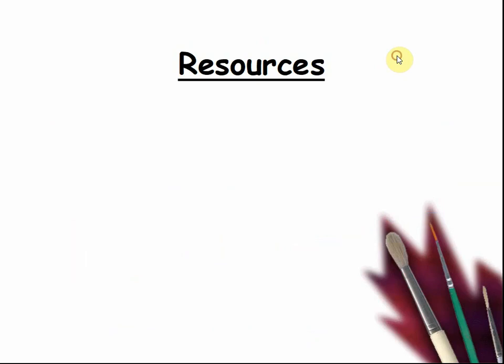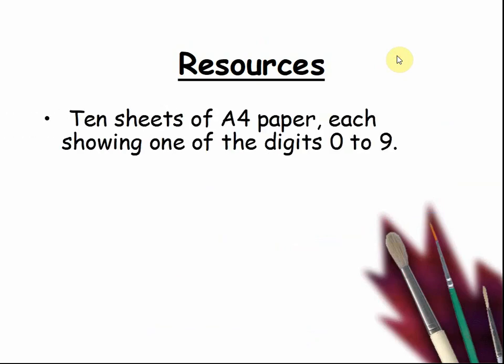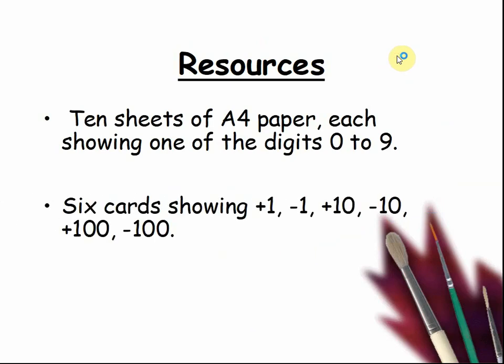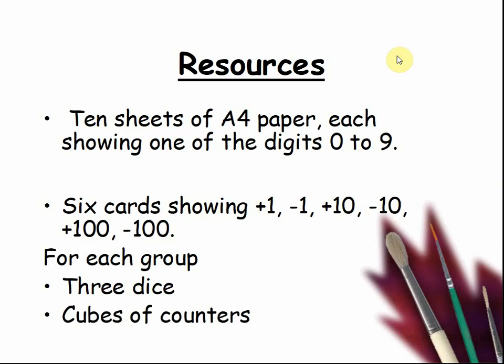Today you will need 10 sheets of A4 paper, each showing one of the digits 0 to 9. Six cards showing plus 1, minus 1, plus 10, minus 10, plus 100, minus 100 for each group. Three dice, cubes or counters, and baseboards, one per pupil.